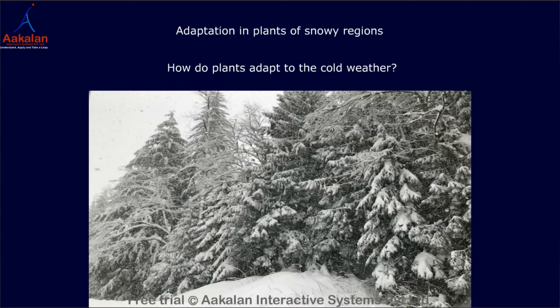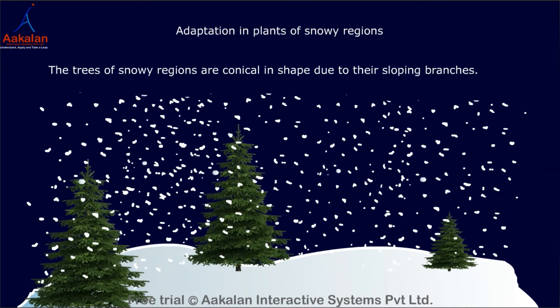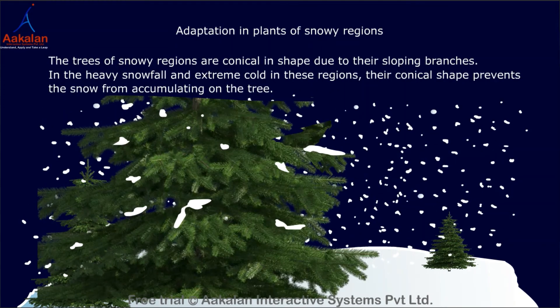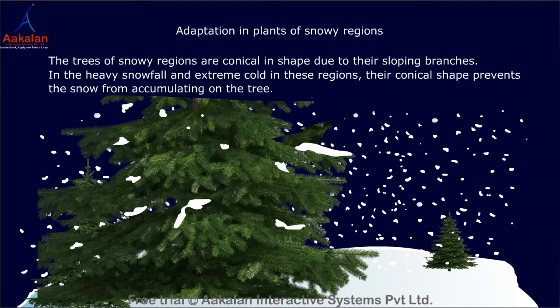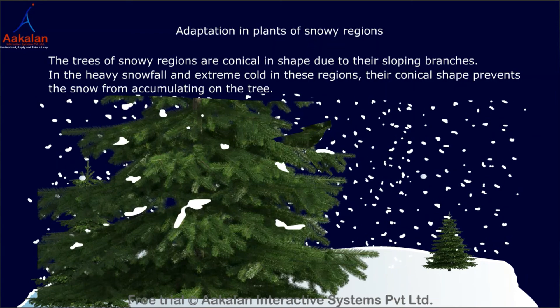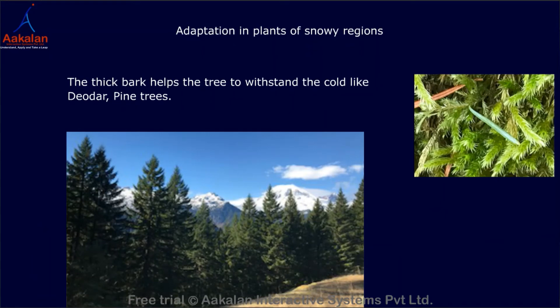Adaptation in plants of snowy regions: The trees of the snowy regions are conical in shape due to their sloping branches. In heavy snowfall and extreme cold, their conical shape prevents snow from accumulating on the tree. The thick bark helps the tree to withstand the cold.